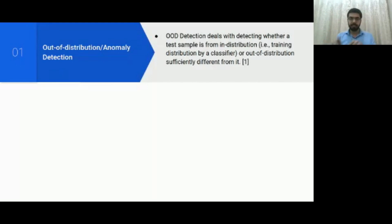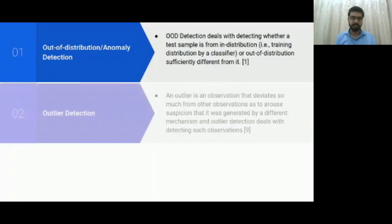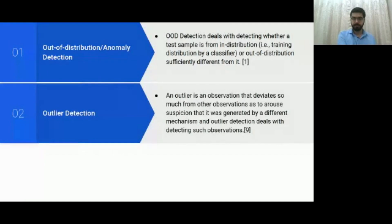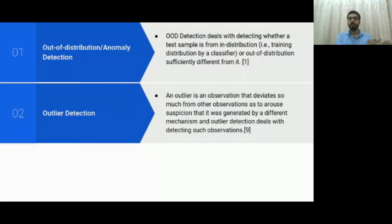Going deeper, there are two more specific definitions: outlier detection and novelty detection. An outlier is an observation that deviates so much from other observations as to arouse suspicion that it was generated by a different mechanism, and outlier detection deals with the detection of such observations.